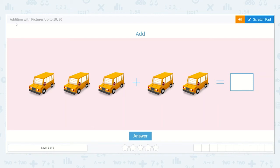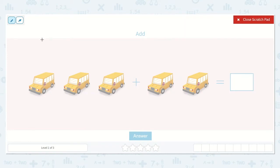Let's look at our lesson: addition with pictures up to 10, 20. They would like us to add. They give us two groups of buses. Here I see 1, 2, 3. So 3, plus here I see 1, 2. So this picture represents 3 plus 2 is equal to a number.